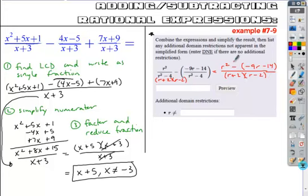So I'm then going to simplify my numerator. I'm going to take those and work just with my numerator, r squared, distribute my negative. So minus and minus becomes plus 9r. Minus and minus becomes plus 14. And I'm going to continue to write this.